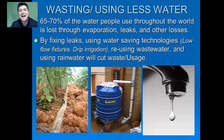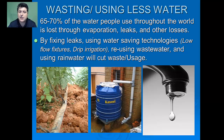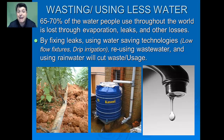Most environmentalists say the best way to have water into the future is to waste less and use less. 65 to 70 percent of the water we use gets lost through evaporation, leaks, and other losses. By fixing leaks, using water-saving technologies like low-flow fixtures or drip irrigation, recollecting and reusing wastewater, and capturing rainwater instead of letting it run off roofs and surfaces, we can cut down on waste and use. With growing populations and a finite water supply, it's essential to maximize water use so everyone will have access to clean water into the future.